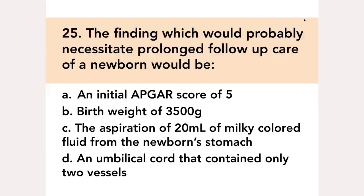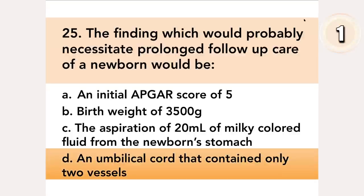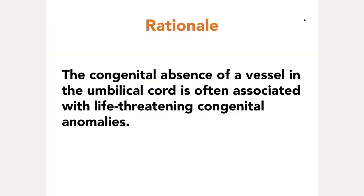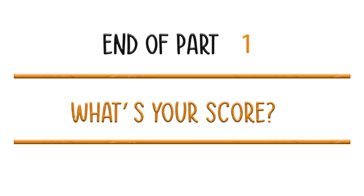The finding which would probably necessitate prolonged follow-up care of a newborn would be: A. An initial APGAR score of 5, B. Birth weight of 3,500 grams, C. The aspiration of 20 ml of milky colored fluid from the newborn's stomach, D. An umbilical cord that contained only two vessels. The congenital absence of a vessel in the umbilical cord is often associated with life-threatening congenital anomalies.